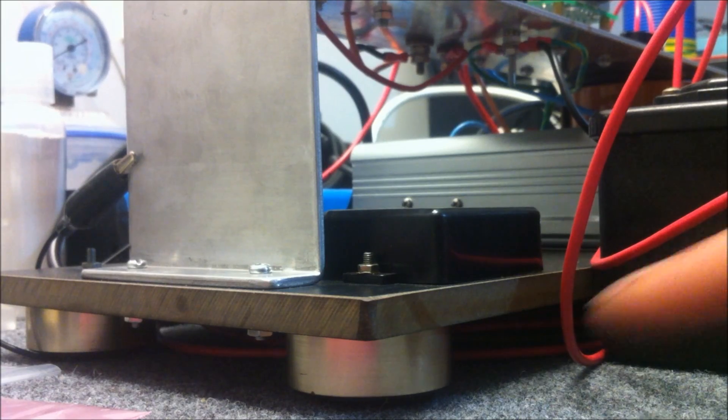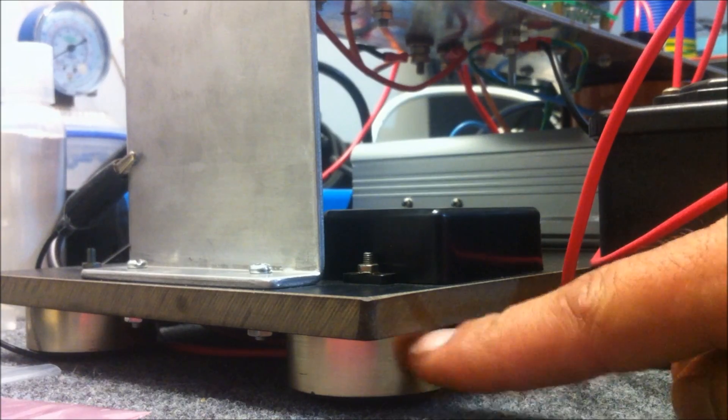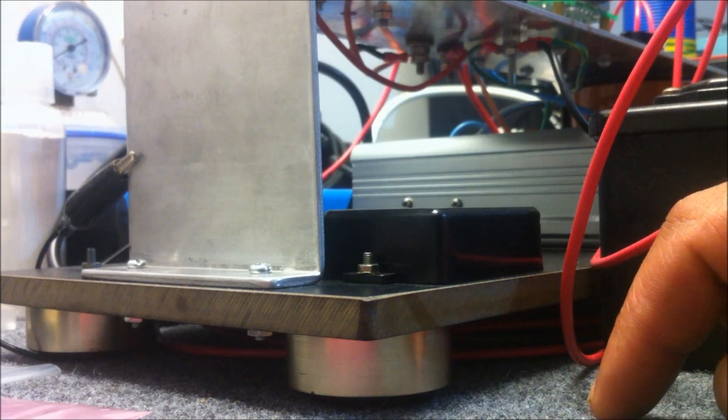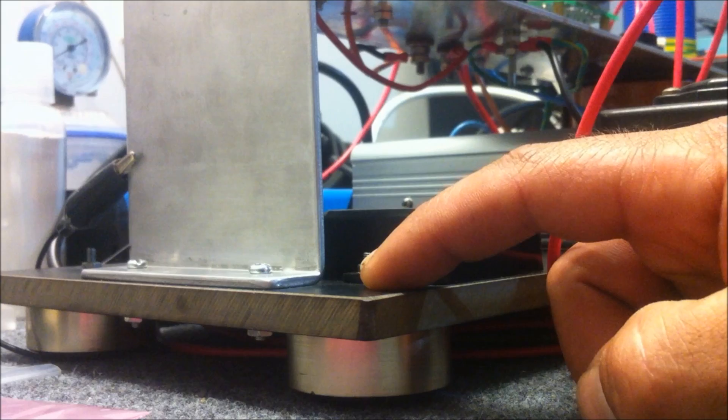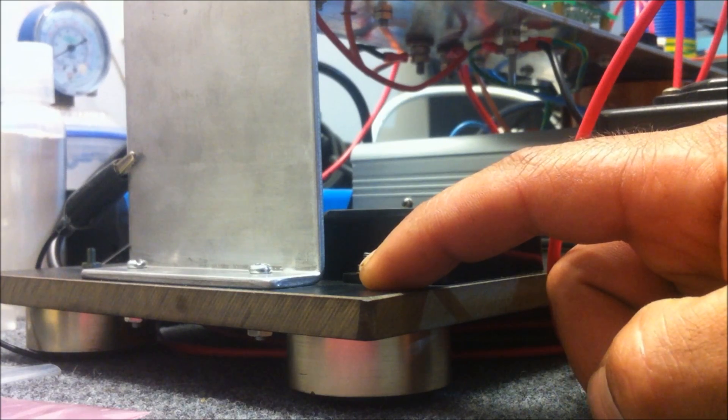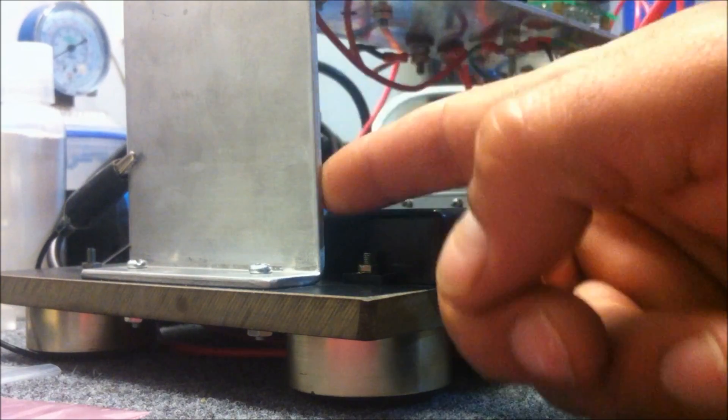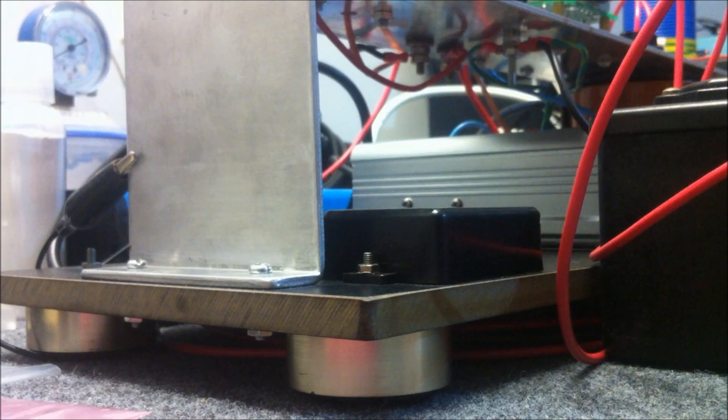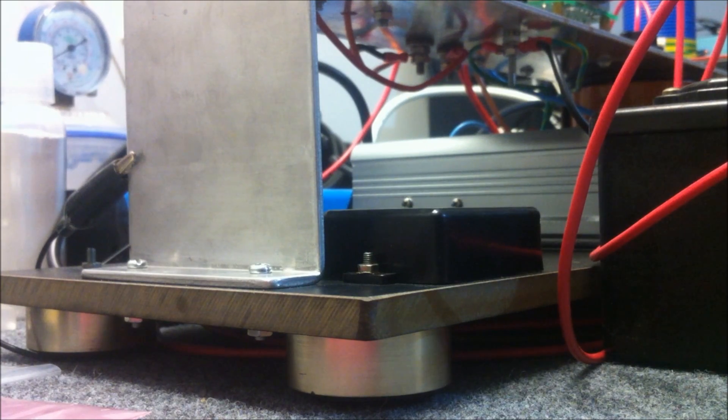So starting at the base you can see these feet here which I have salvaged from an old amplifier. The base is a piece of old switchboard panelling and I've mounted all the controls on this piece of three millimeter aluminium which I've folded and mounted to the switchboard panel.